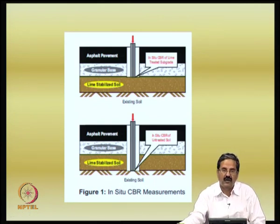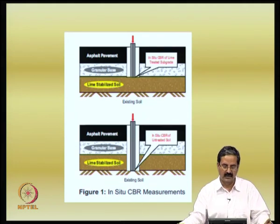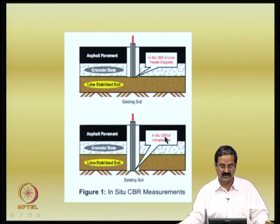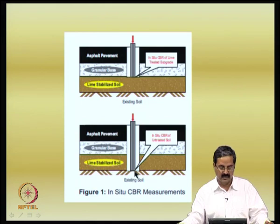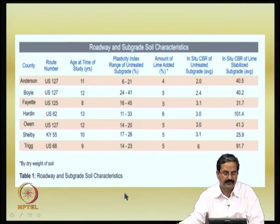An example of durability studies conducted by a company that deals exclusively with lime treatment: similar to in-situ CBR and laboratory CBR, they have done in-situ CBR tests for existing untreated soil and lime-treated soil. Over a period of time for the pavement layer — which has lime treatment, GSB, and asphalt pavement — they compare what is happening. They measured the CBR, and the different counties and years of study range from 11 to 14 years.